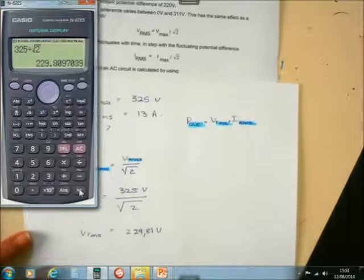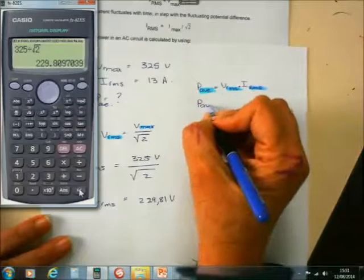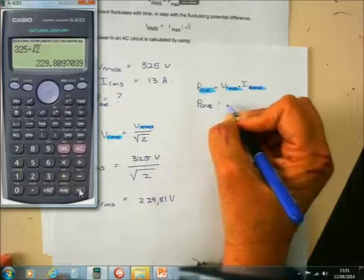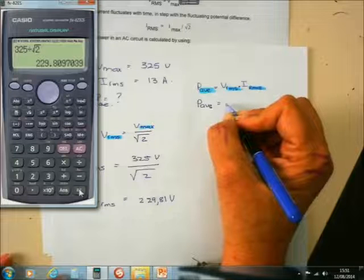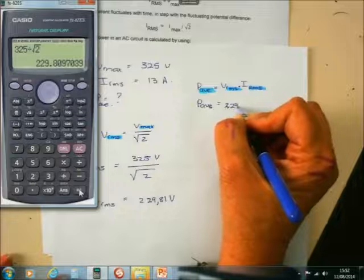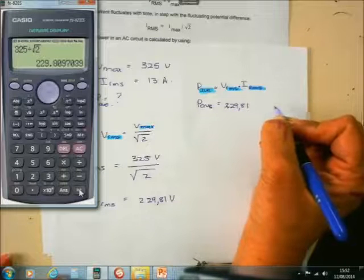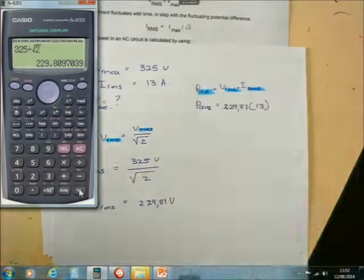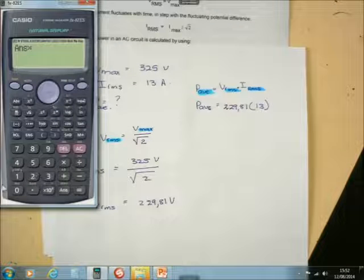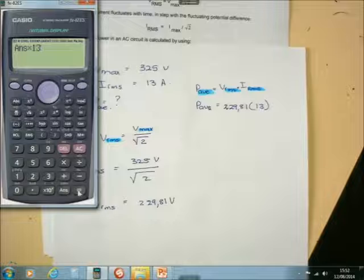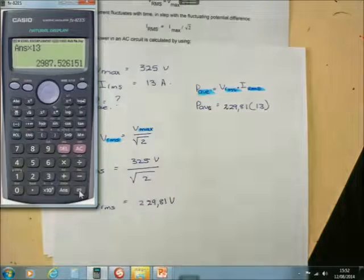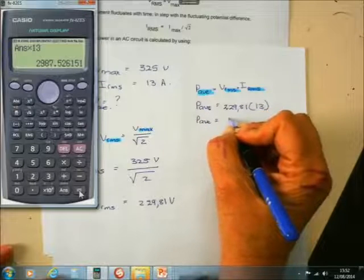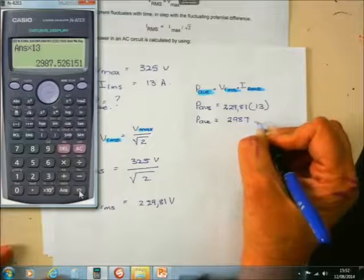So, 325 divided by the square root of 2 is equal to 229.81 volts. So, now what do I do now? Now, I go and I say Paverage because that's what they want to know from me is going to be equal to VRMS which is 229.81 times by 13 which is IRMS. So, let's see if we are correct. Times by 13 equals.